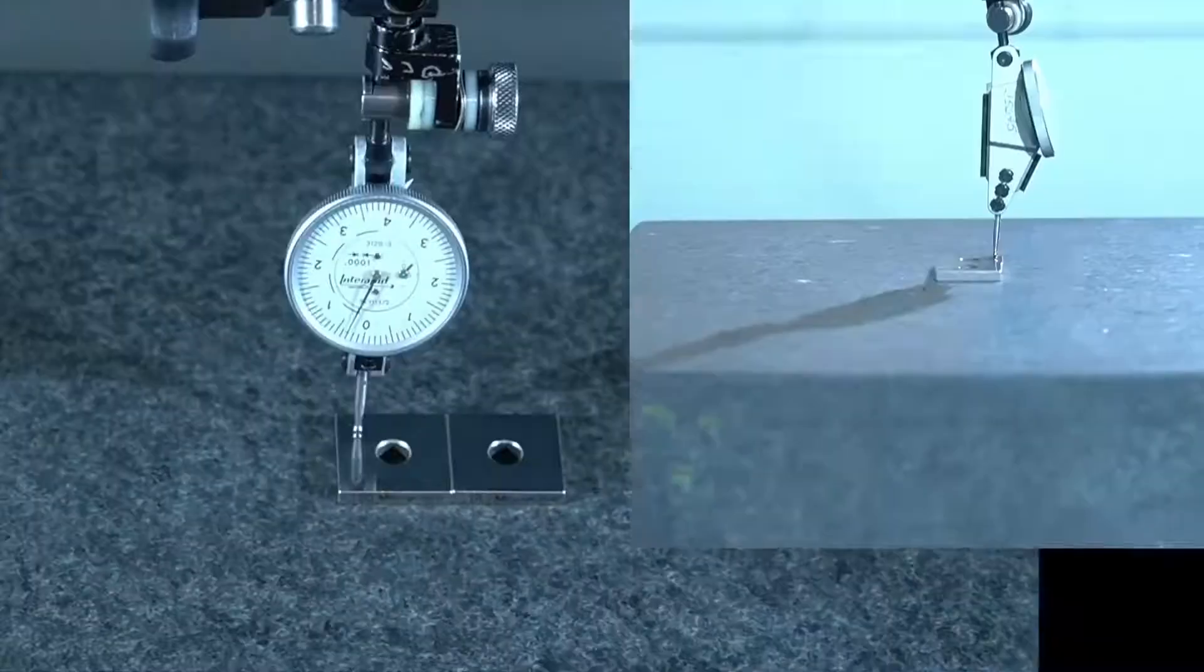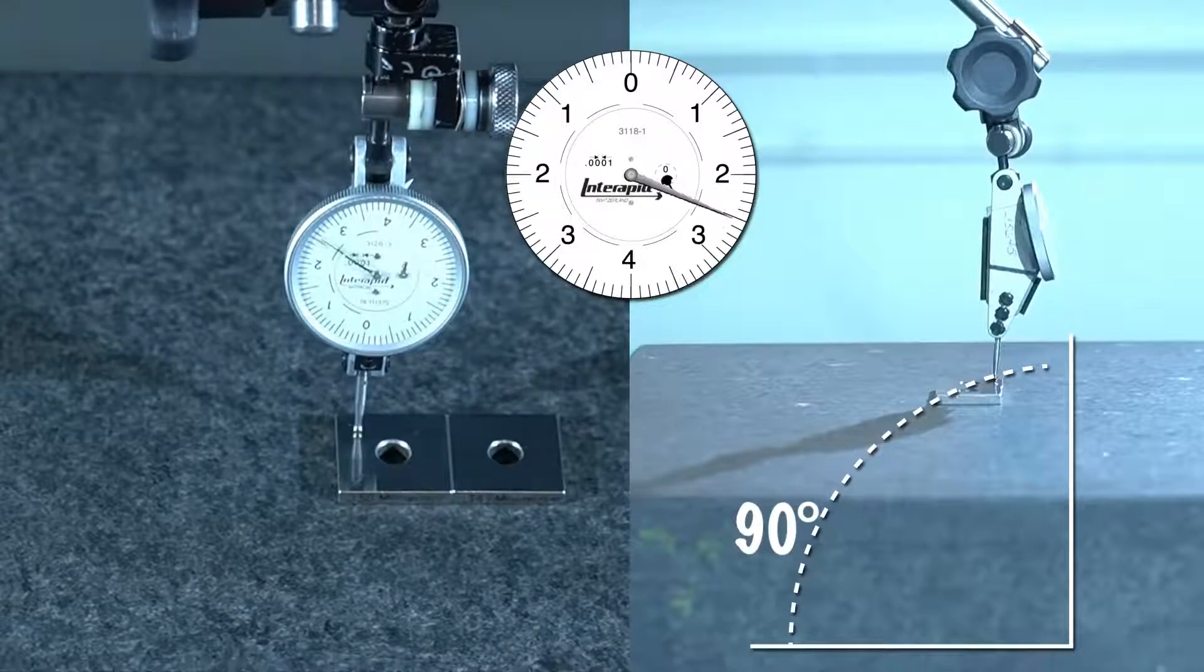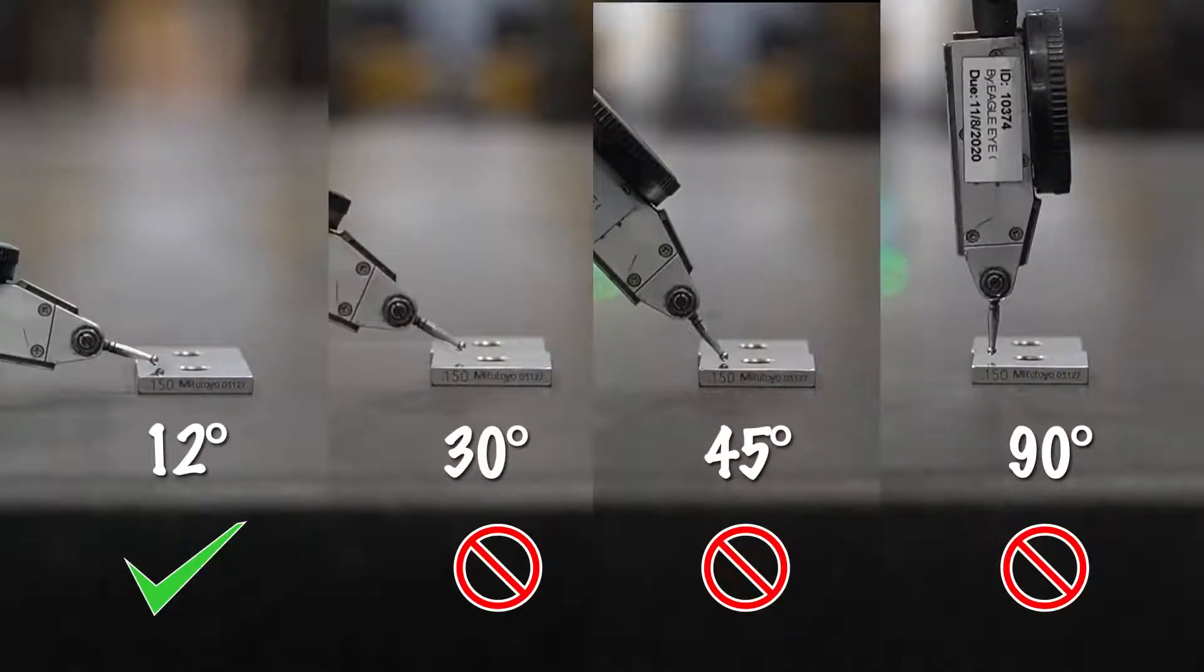Finally, let's go to the ridiculous extreme of putting the stylus at 90 degrees. Obviously that's just silly, because the stylus wasn't even designed to move in that axis. So always set an Interapid indicator at 12 degrees from the surface to be measured. If you're using an indicator made by a different manufacturer, be sure to know the angle at which you should set the stylus.